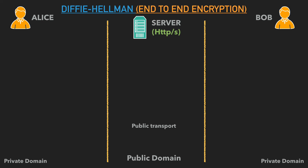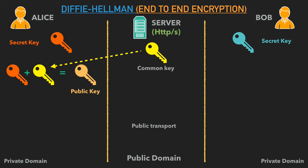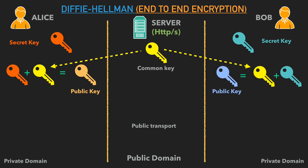Diffie-Hellman requires Alice and Bob to agree on a common key — represented here as yellow. Alice then generates her own secret key, shown as red, and Bob generates his secret key, shown as cyan. These secret keys never leave their respective private domains. Alice takes the common key and mixes it with her secret key to produce her public key. Importantly, this is a one-way function: you cannot derive the secret key from the public key and the common key. Bob similarly mixes the common key with his cyan secret key to generate his public key.